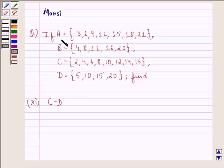The question says if A equals to the set {3, 6, 9, 12, 15, 18, 21},